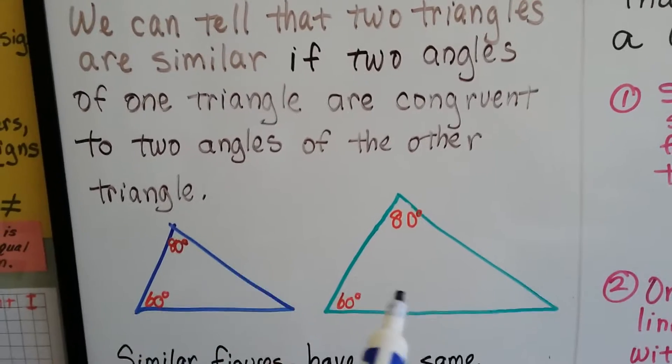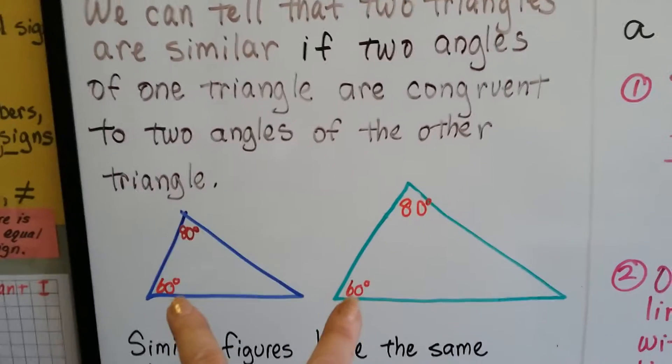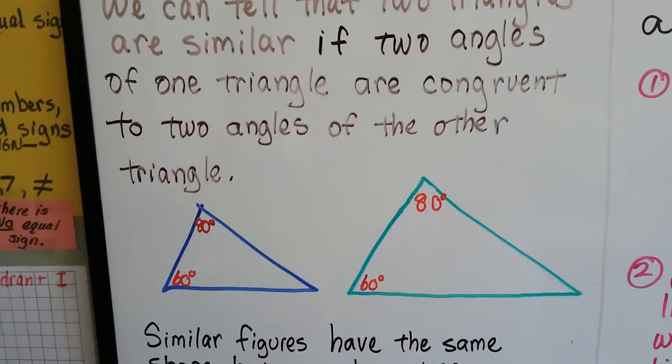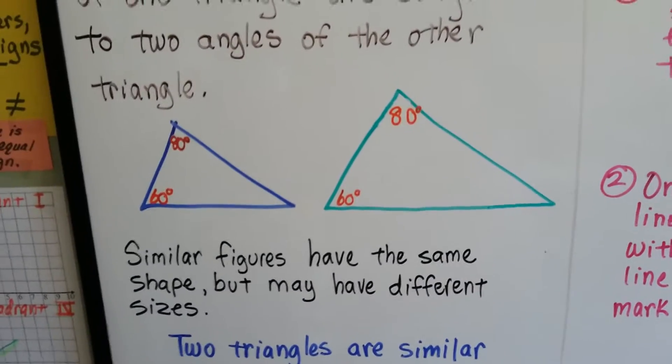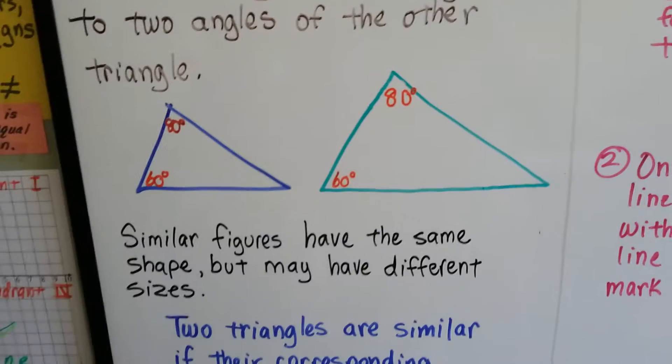We can see this blue triangle smaller than the green one, but they both have a 60-degree angle down here and an 80-degree angle at the top. Similar figures have the same shape but may have different sizes.